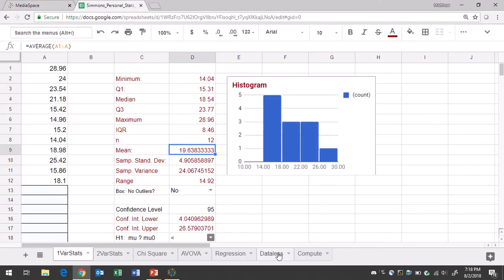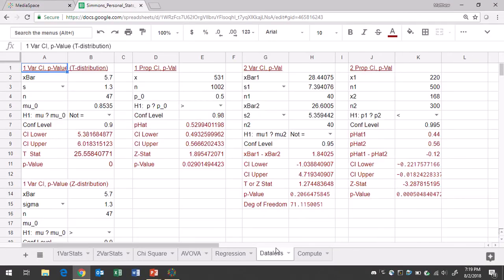In Google Sheets, you will go to the data list tab to proportion confidence level p-value region. For group 1, type in successes and the sample size. Group 2, type in successes and the sample size.